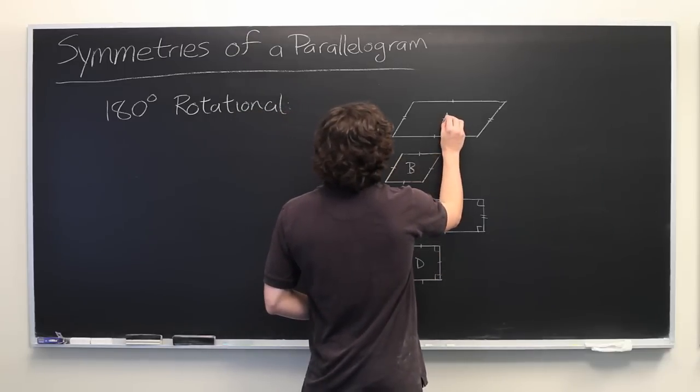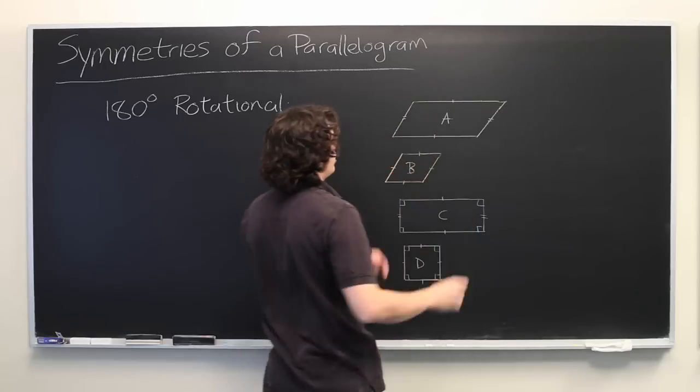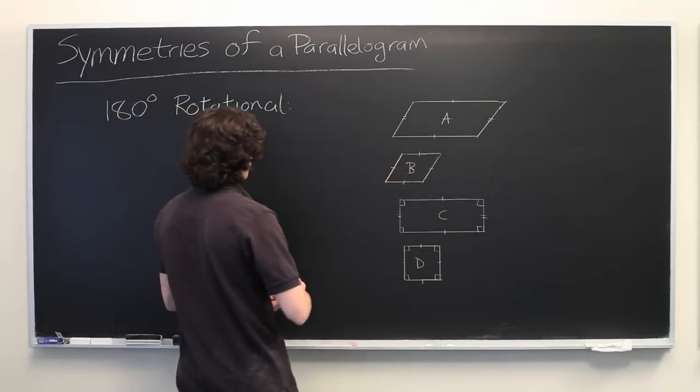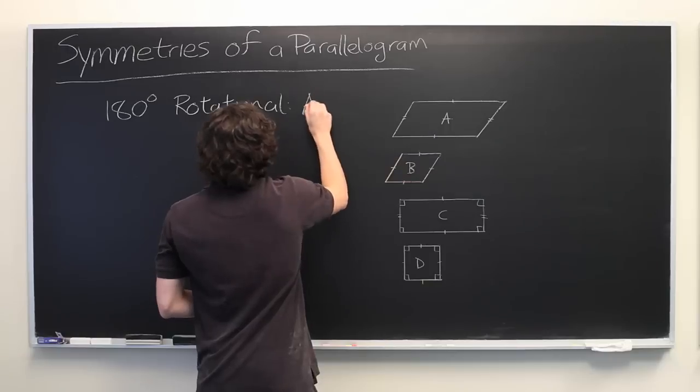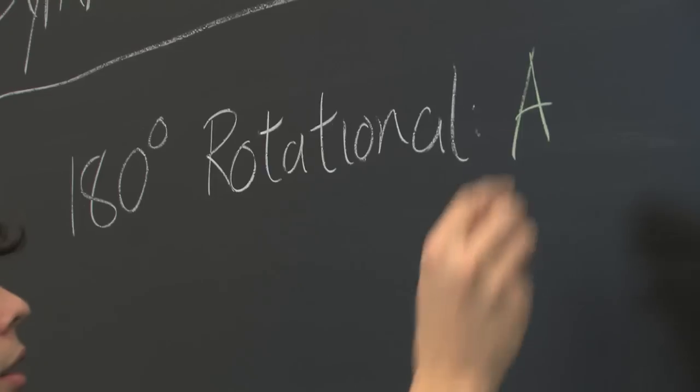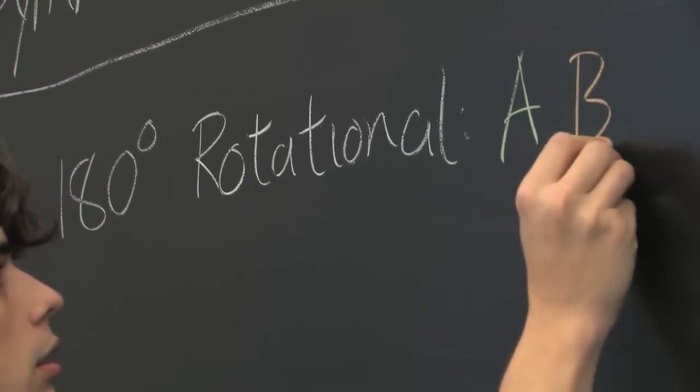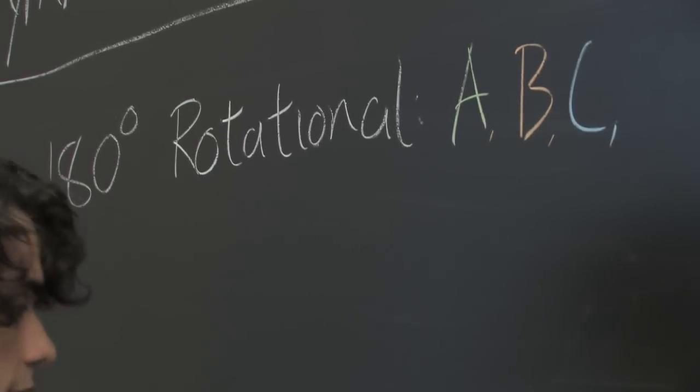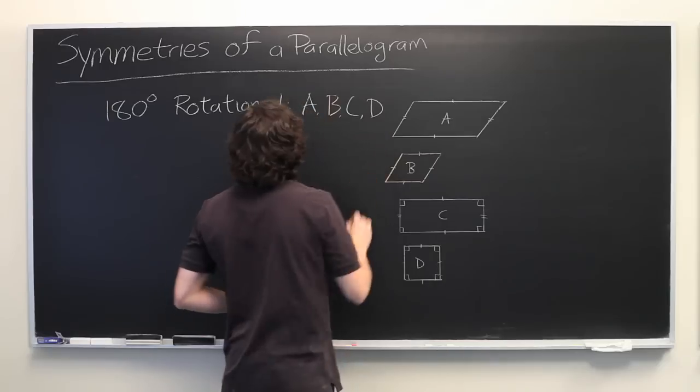You stick a point right in the middle, rotate the whole thing around it. Once you get to 180 degrees, you'll get the exact same shape again every time. A, B, C, and D. Great.